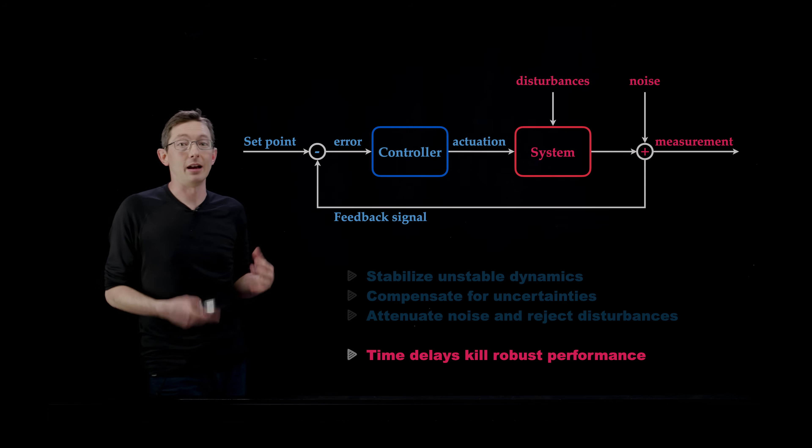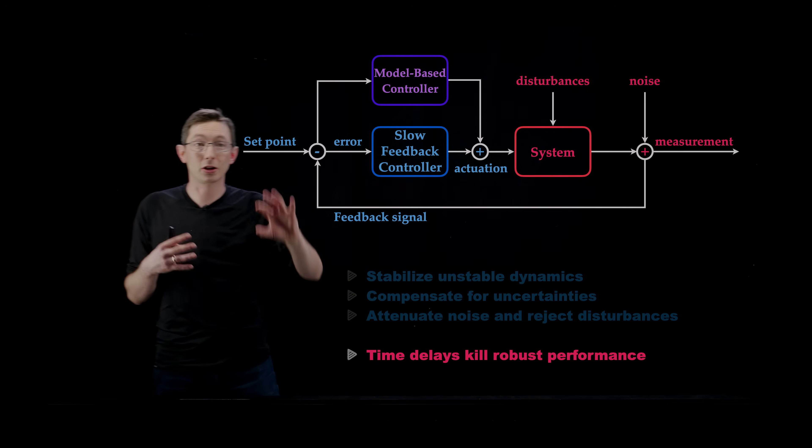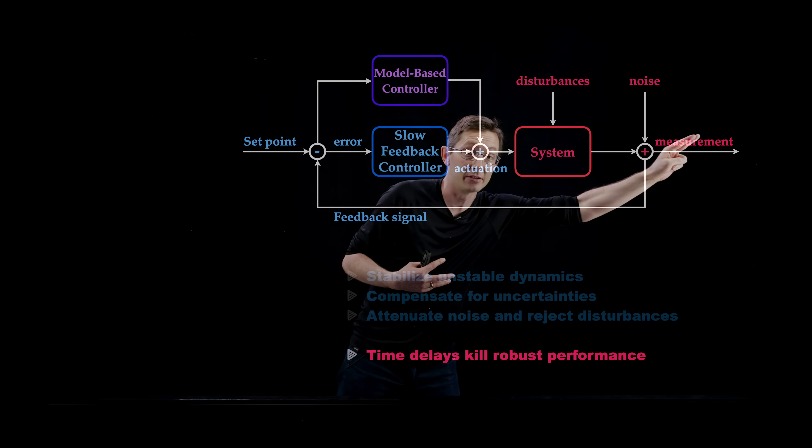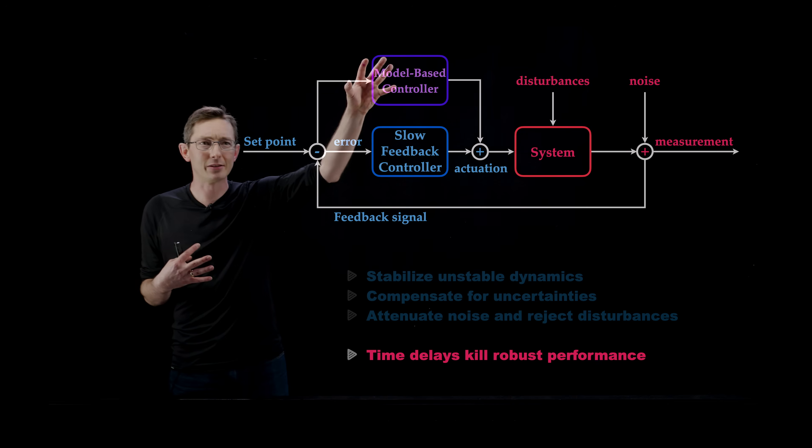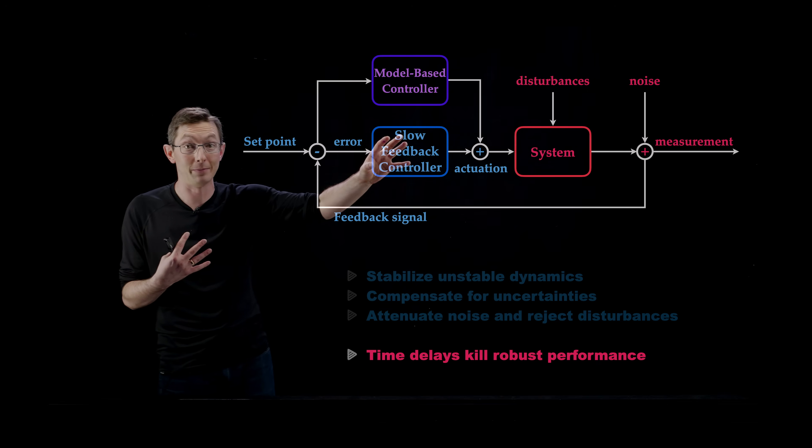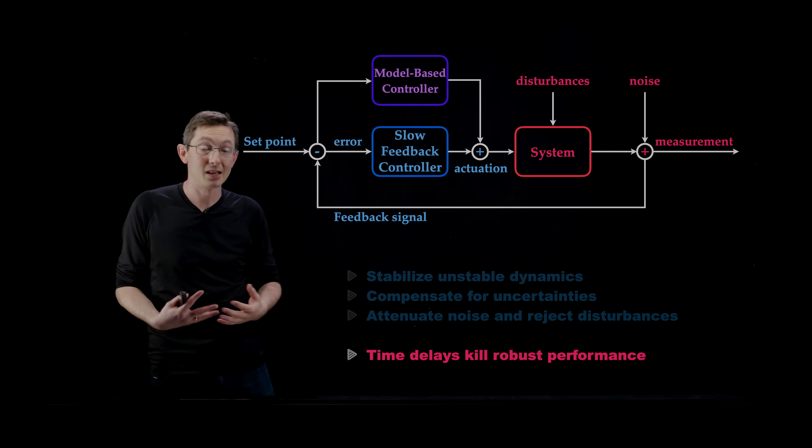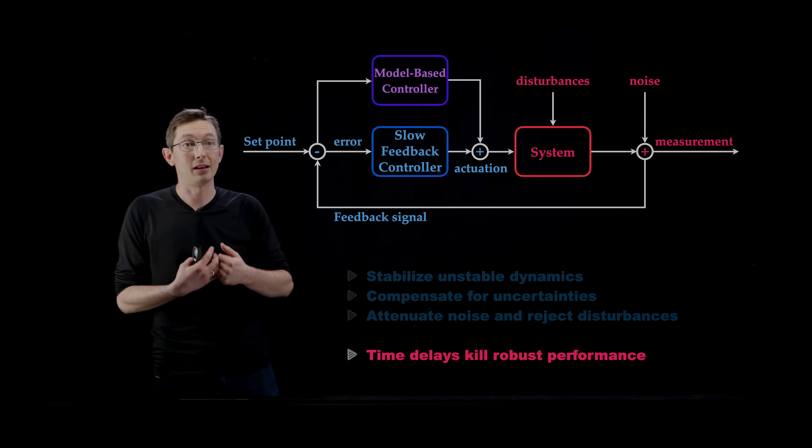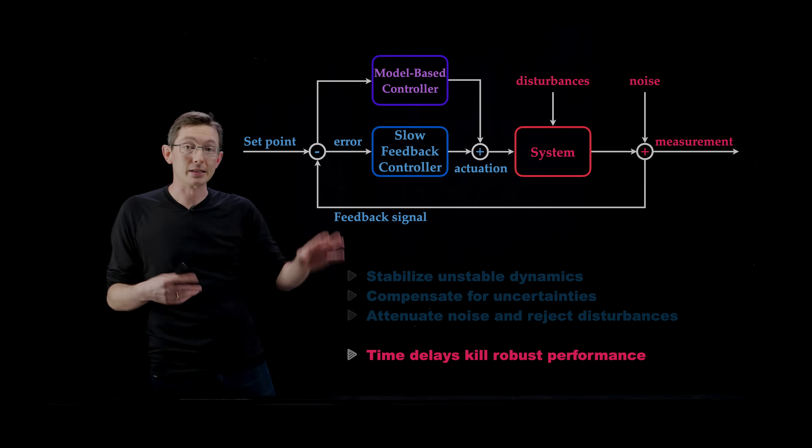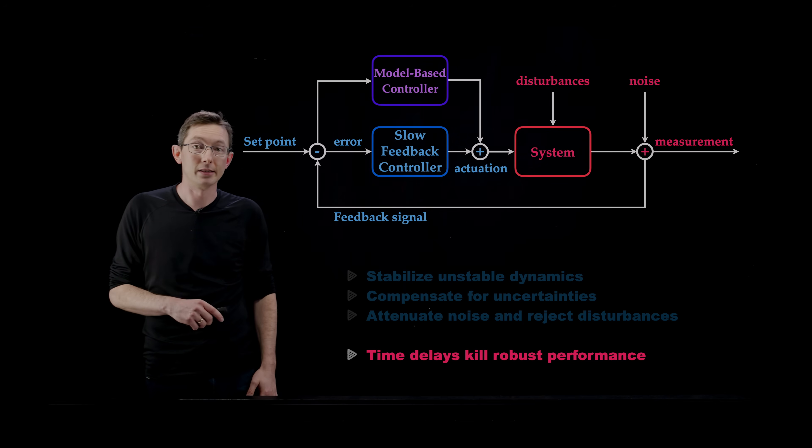And so just one strategy when you have time delays is to use a model-based controller. Basically, you use the model of your system to cook up the best plan you can predicting the future. And then you have a slower feedback controller that actually measures how your system is doing and feeds that back to slowly correct. And so this is kind of a one-two punch of a fast model-based controller and a slower kind of supervisory feedback controller based on the measurements of your system. And as far as I know, this is kind of the best strategy we have for controlling systems that have big time delays where you have model uncertainties, but where you really do need robust performance as soon as possible, as quick as possible. So I think this is really relevant to kind of understanding strategies for flattening the curve and effectively controlling this situation.